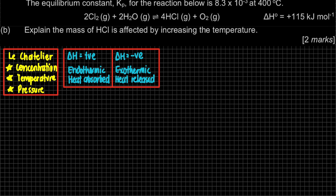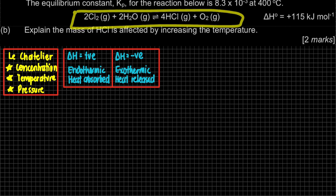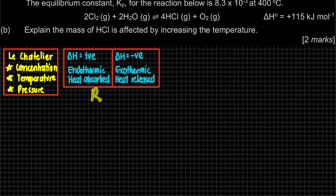There are two cases for ΔH: positive or negative. ΔH tells us whether the reaction is endothermic or exothermic. For an endothermic reaction, heat is absorbed. If ΔH is negative, it is an exothermic reaction where heat is released. When talking about temperature, we need to know which side has the heat. For an endothermic reaction, heat is absorbed and is effectively on the reactant side. Since ΔH = +115 kJ/mol, this is endothermic — heat is at the reactant side.